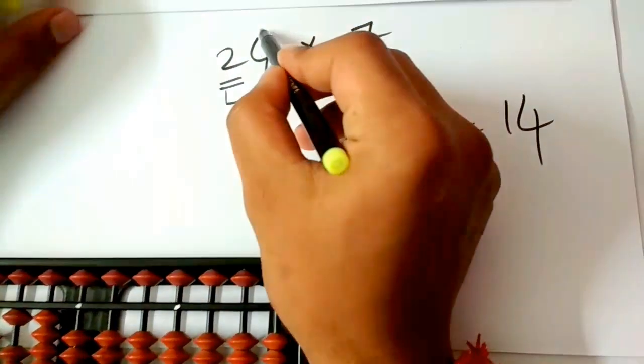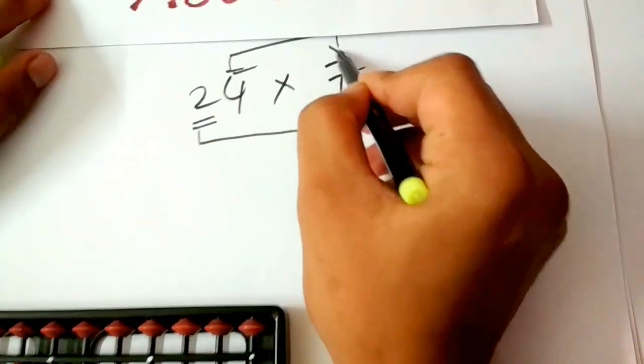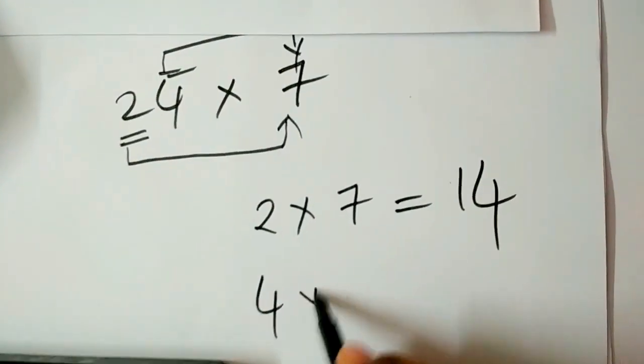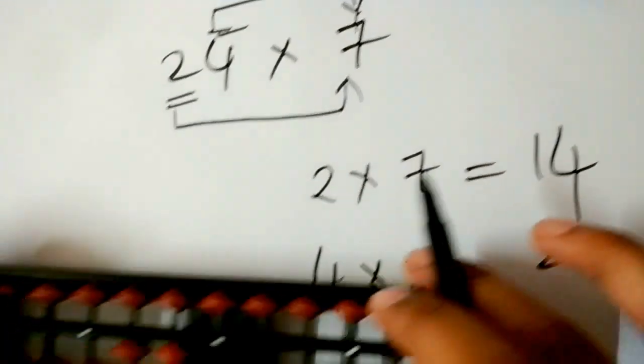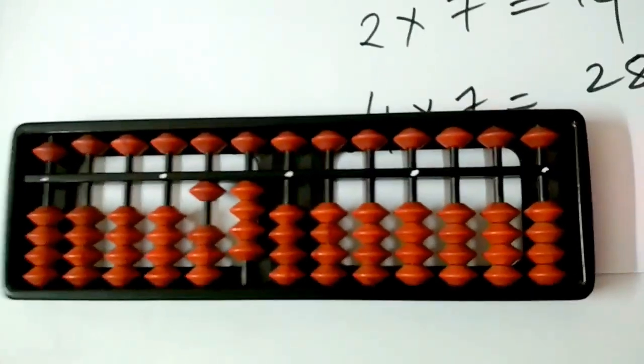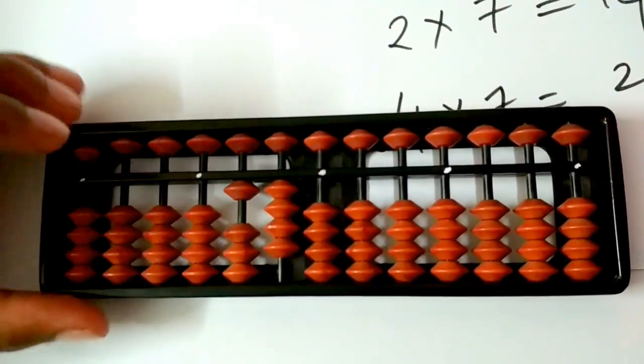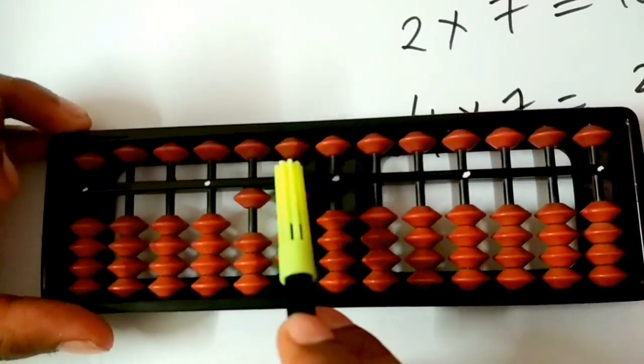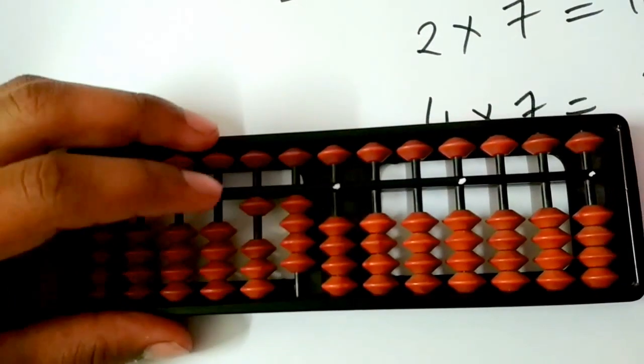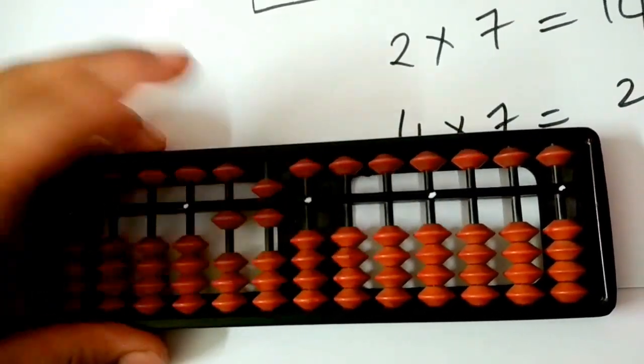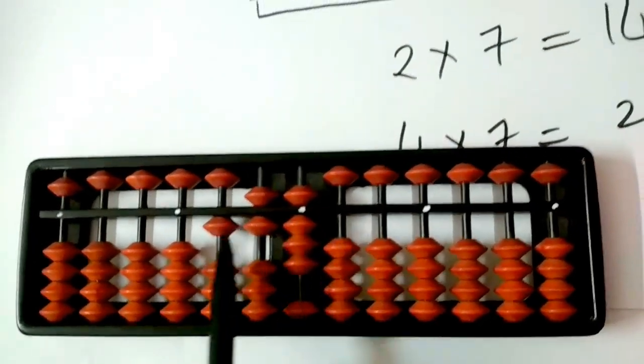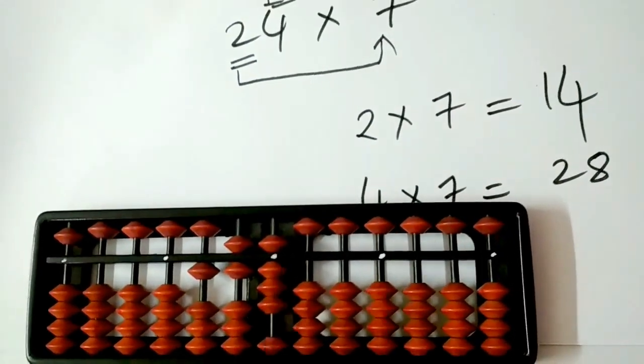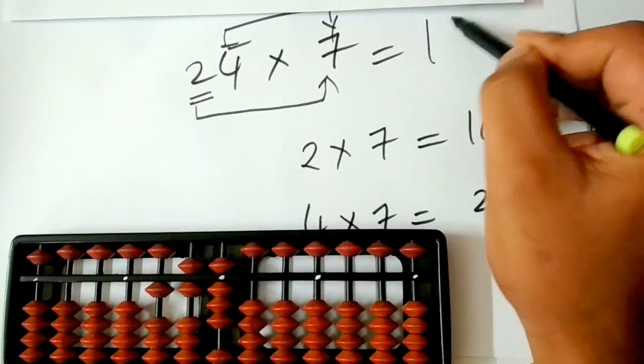Let us multiply the other digits 4 and 7. 4 and 7 is 28 as you all know. 28 should be added from the tens rod. So, let us add 28: 20 and 8. We got the answer as 168. This is our final answer.